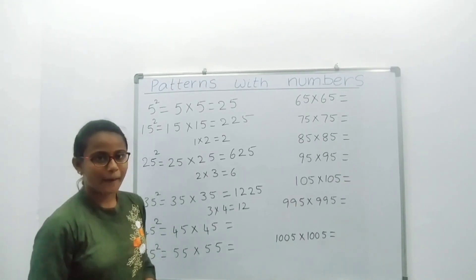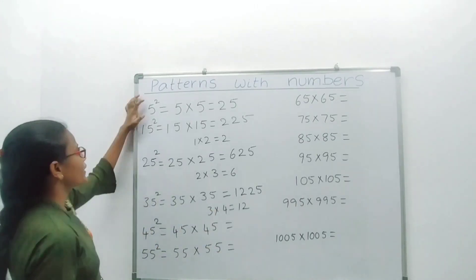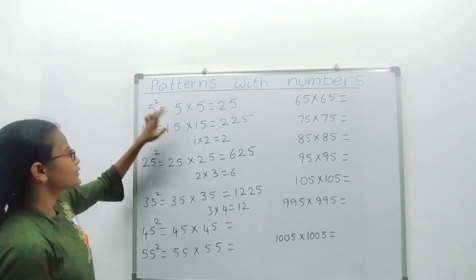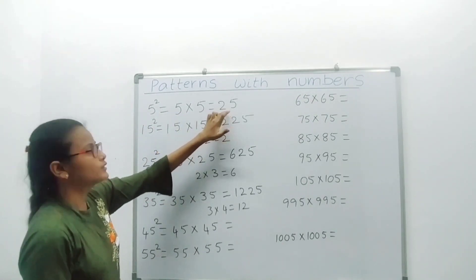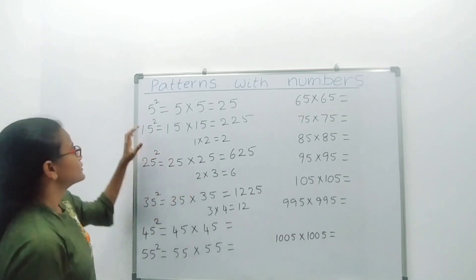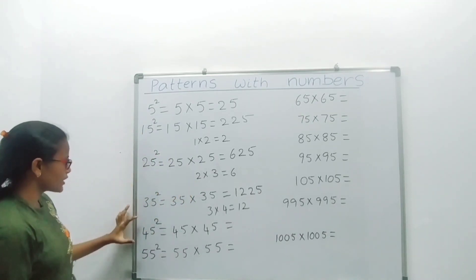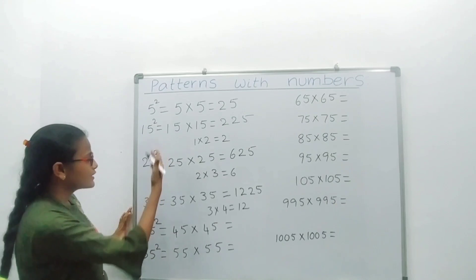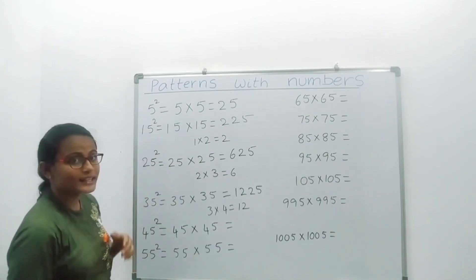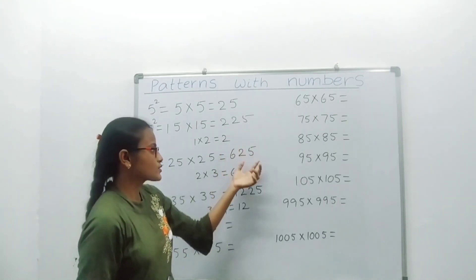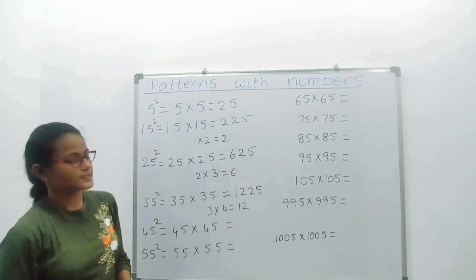Now I am explaining the square pattern. 5 squared — 5 into 5 equals 25. We know that. Next, 15 squared, 25 squared, 35 squared, 45 squared — in all these numbers, 5 is in the units place. So in that pattern, 25 is commonly in the units and tens place.